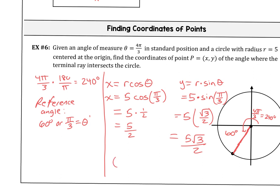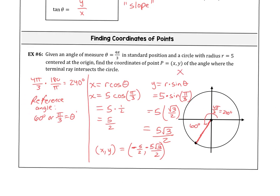Our x, y coordinates are negative 5/2 and negative 5√3/2. Both are negative for the simple fact that we're in quadrant 3, so x has to be negative and y has to be negative. Those are the coordinates of 4π/3 with a radius of 5. Don't confuse this with the unit circle, where 4π/3 — with radius 1 — has coordinates of negative 1/2 and negative √3/2. We're changing that up because the radius is now 5, so our coordinates are a bit different.